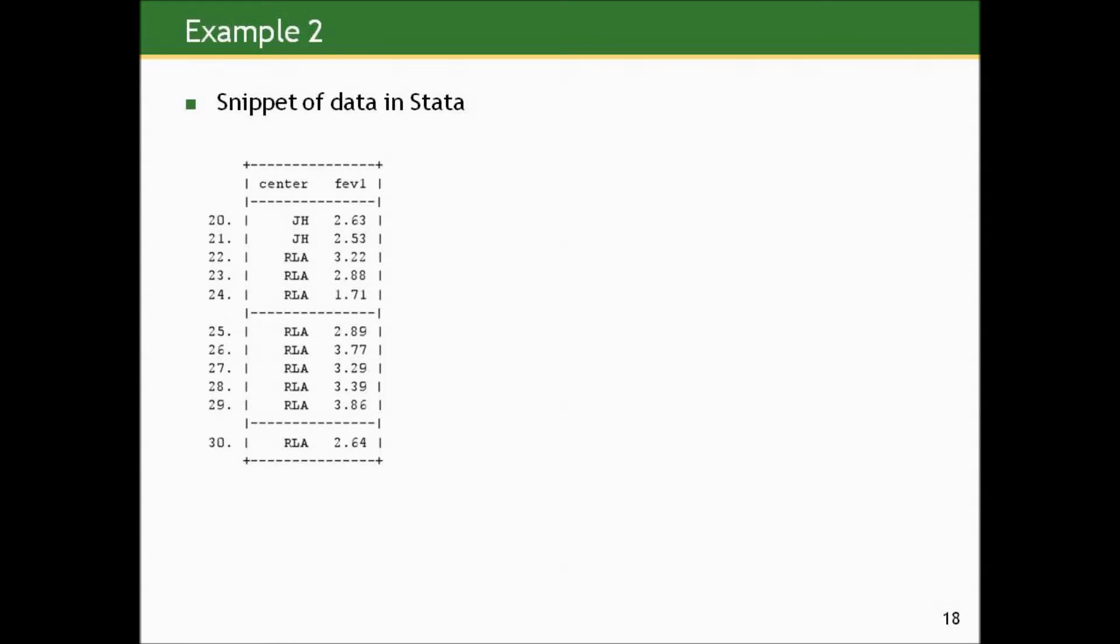Here's a snippet of the data in Stata. And here I'm going to show you actually how to do this in Stata and get a p-value. So here's a listing of observations 20 to 30, and it just gives the center. The first two observations are from Johns Hopkins, the JH. The subsequent eight are from Rancho Los Amigos, RLA. The center is actually a numerical variable that's been labeled with those initials for different values. And then we have the FEV1 measure of each subject.